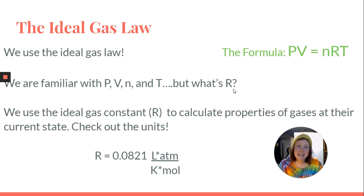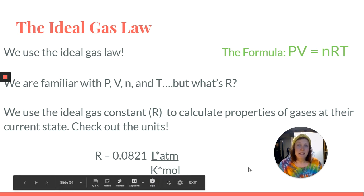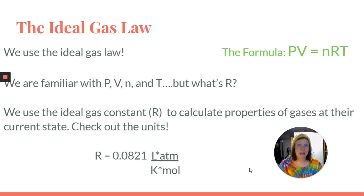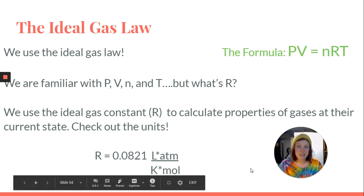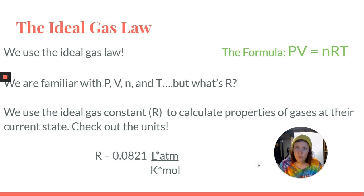R is a constant, the ideal gas constant, and we use it to calculate the properties of gases at their current state. Check out these units. Liters atm per Kelvin mole. Kind of a crazy unit, right? We got four different units all sandwiched into one big unit. But if you look even closer, liters, atm, Kelvin, and mole.